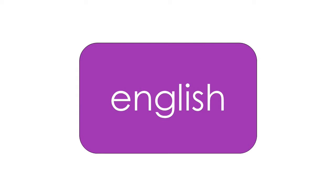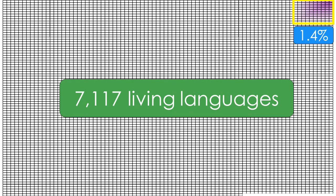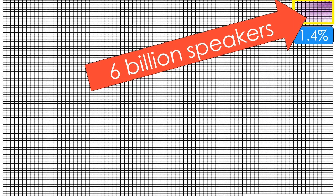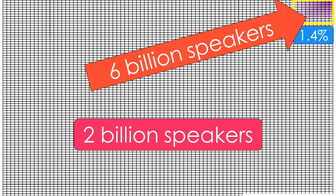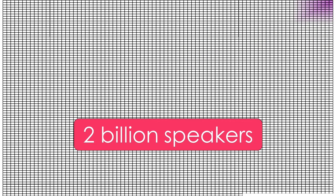Let's say you have created educational software or an app, and you want to adapt it from English to other languages. How many languages are there in the world? There are some 7,117 living languages on Earth, and the top 100 most spoken languages represent only 1.4% of the world's languages. They do represent 6 billion people, but there are another 2 billion people who speak the other 7,000 languages as their first language. In thousands of these languages, there is not a single literacy app.